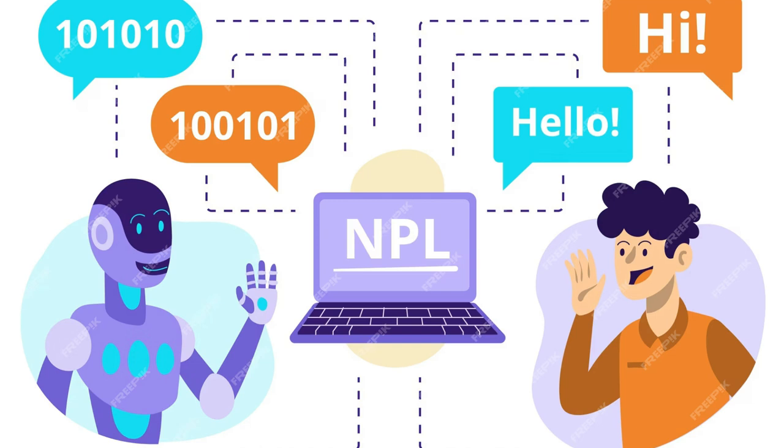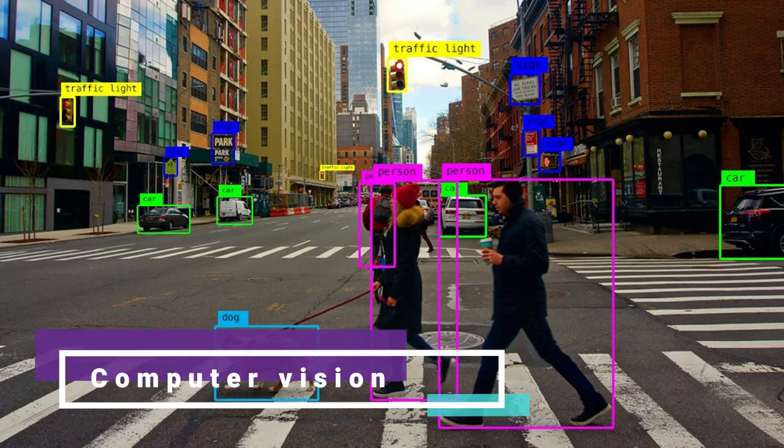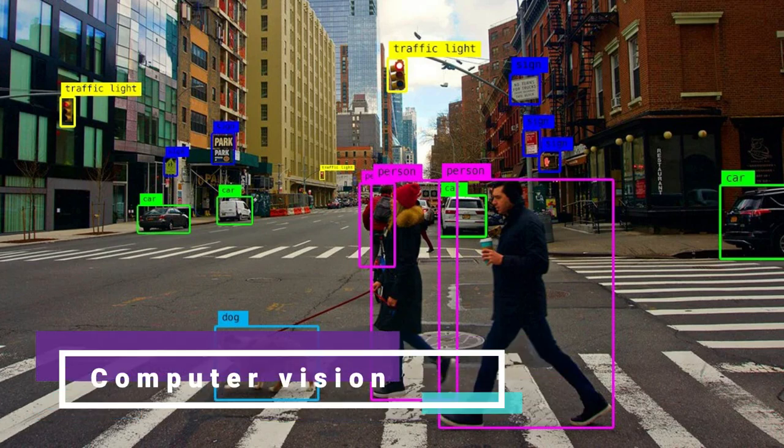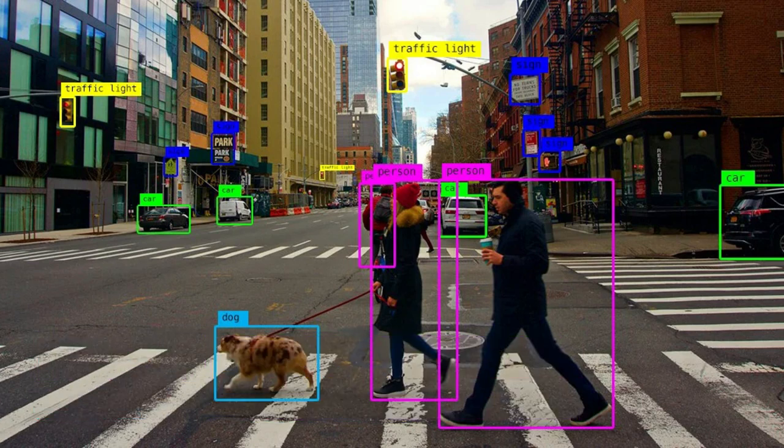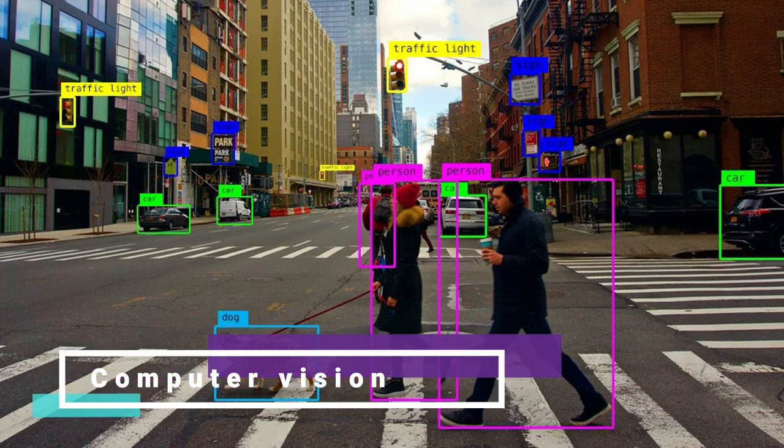Last but not least, we have Computer Vision. This is the technology that allows computers to understand and interpret visual information from the world. It's used in facial recognition, autonomous vehicles, and even medical image analysis.